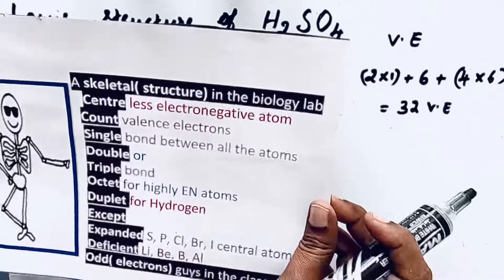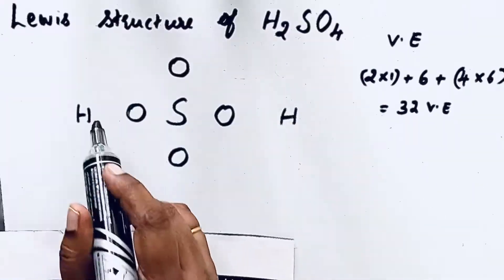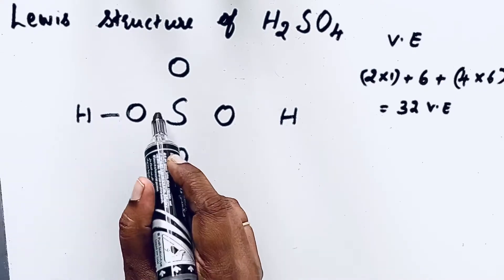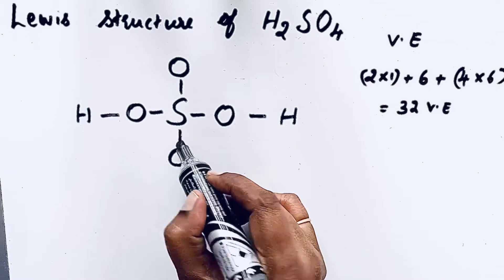Now come to the next step, the fourth step: single bond between all the atoms. We are going to draw single bonds. Single bond means two electrons involved. Single bond between all the atoms.